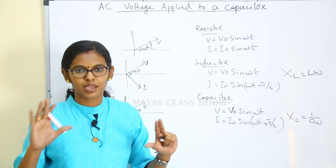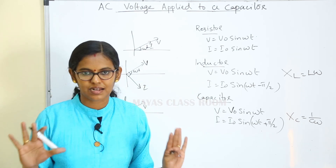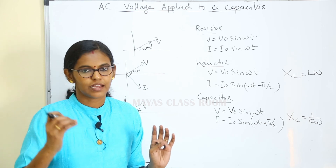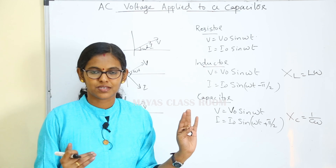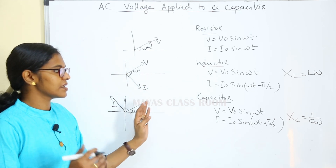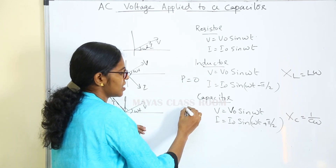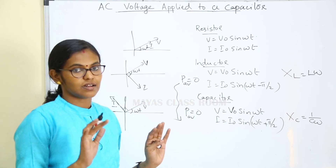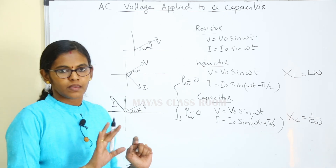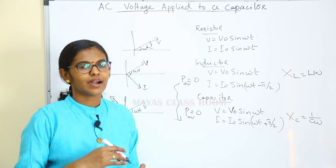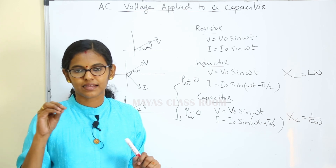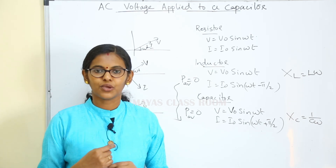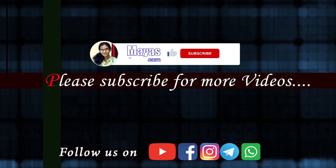If you have any questions, please review the topic. The average power in a purely capacitive circuit is zero, so we call it wattless current. If you have questions about the topic, please check the next class. We will discuss the next topic in the next class. Thank you. Namaskaram.